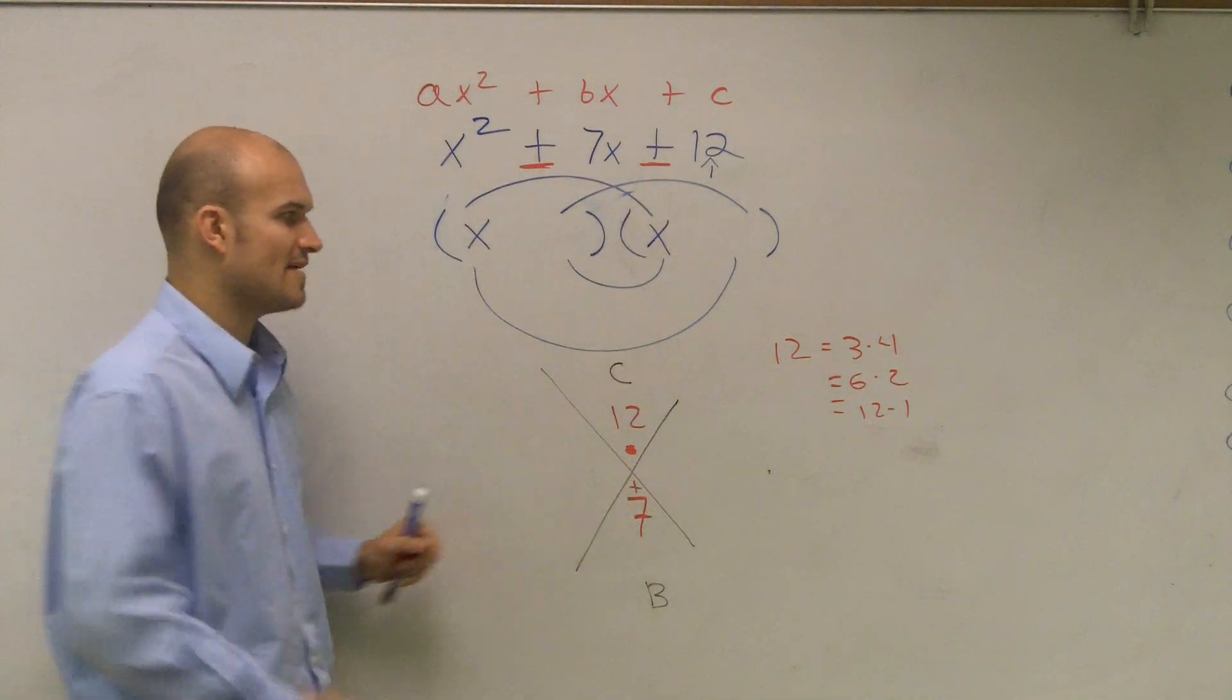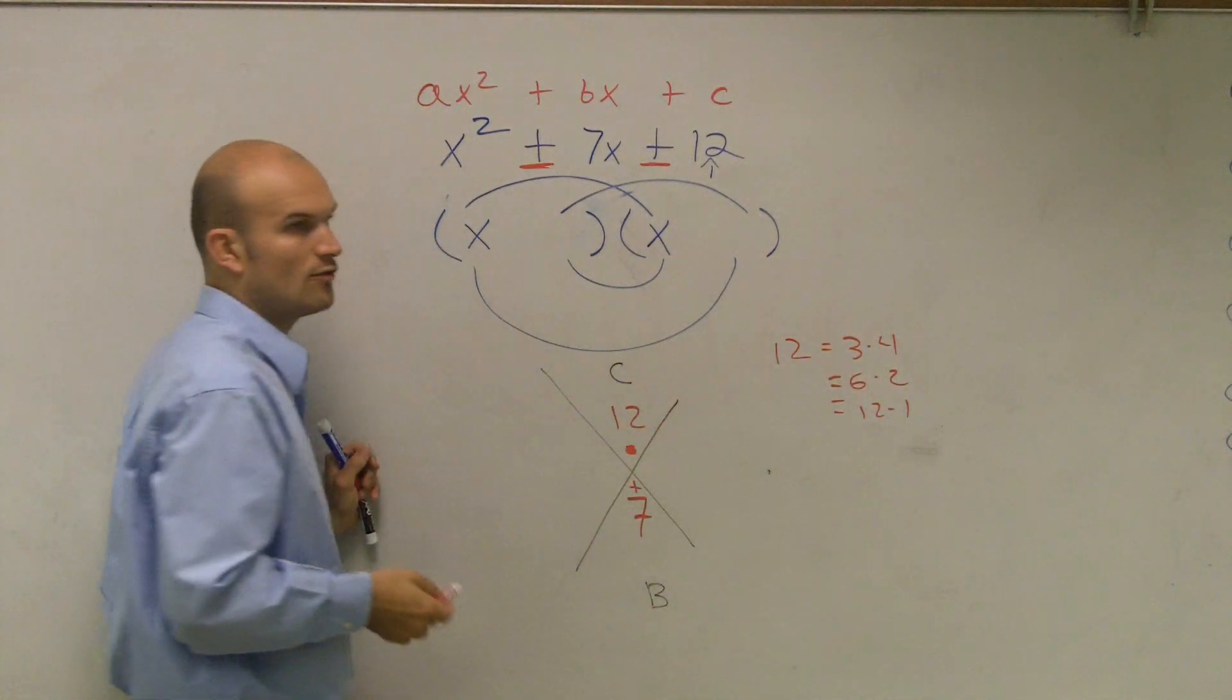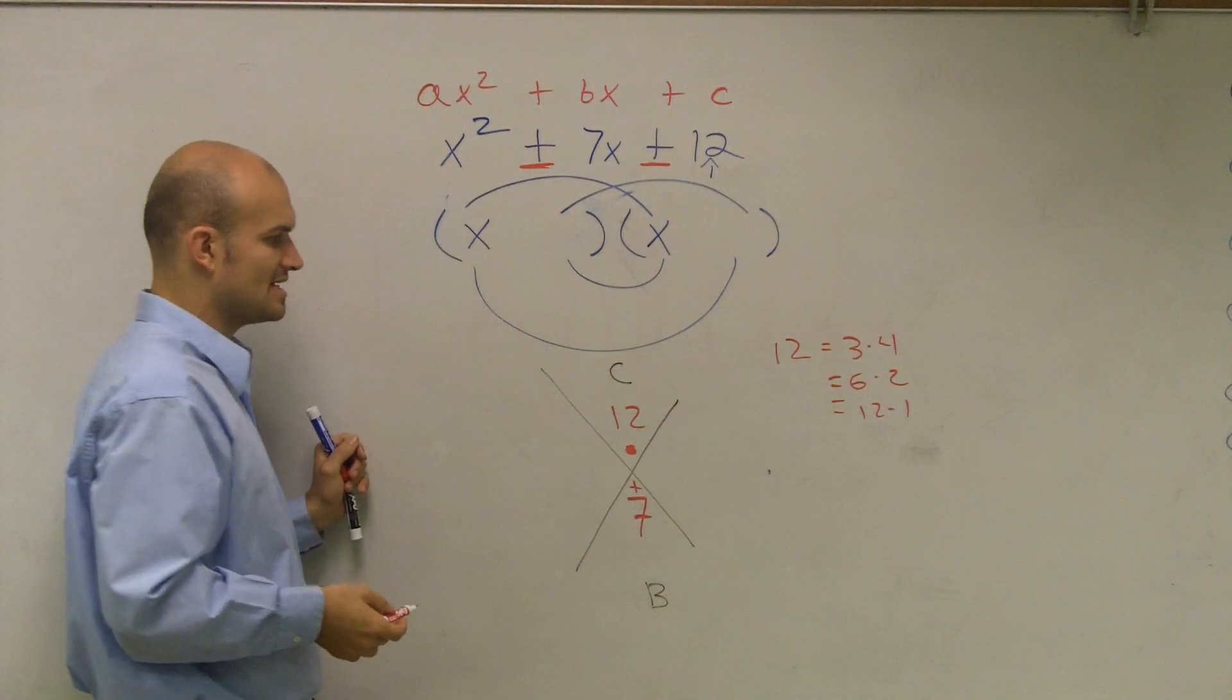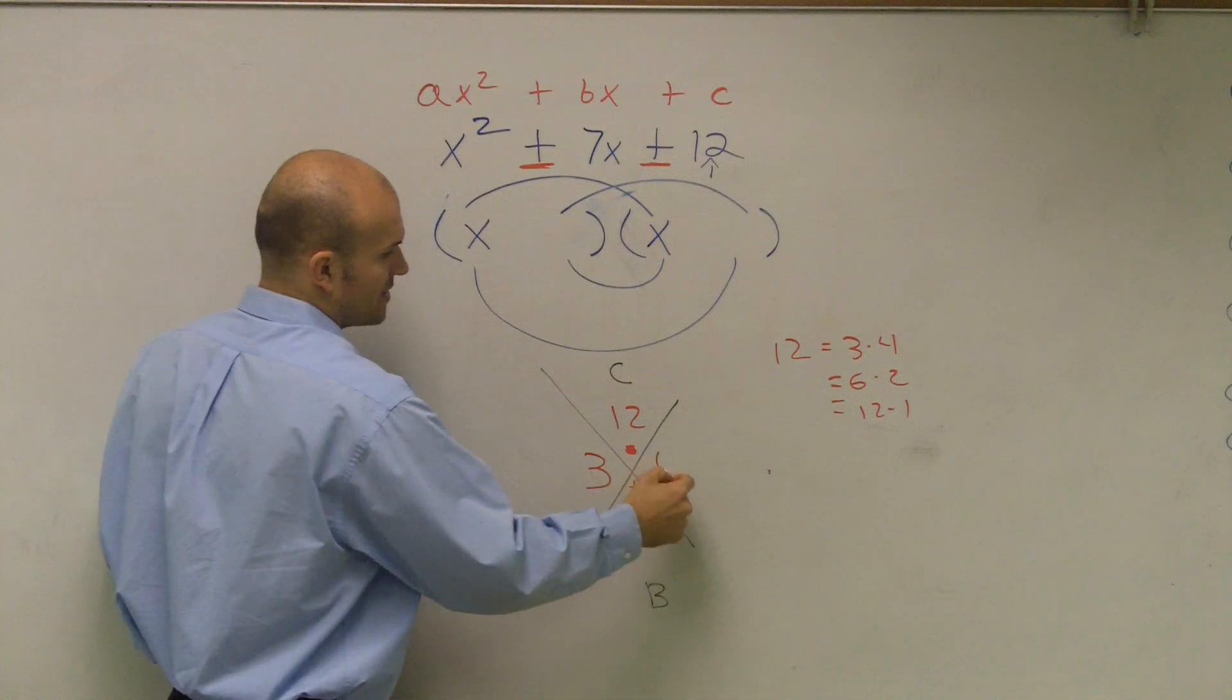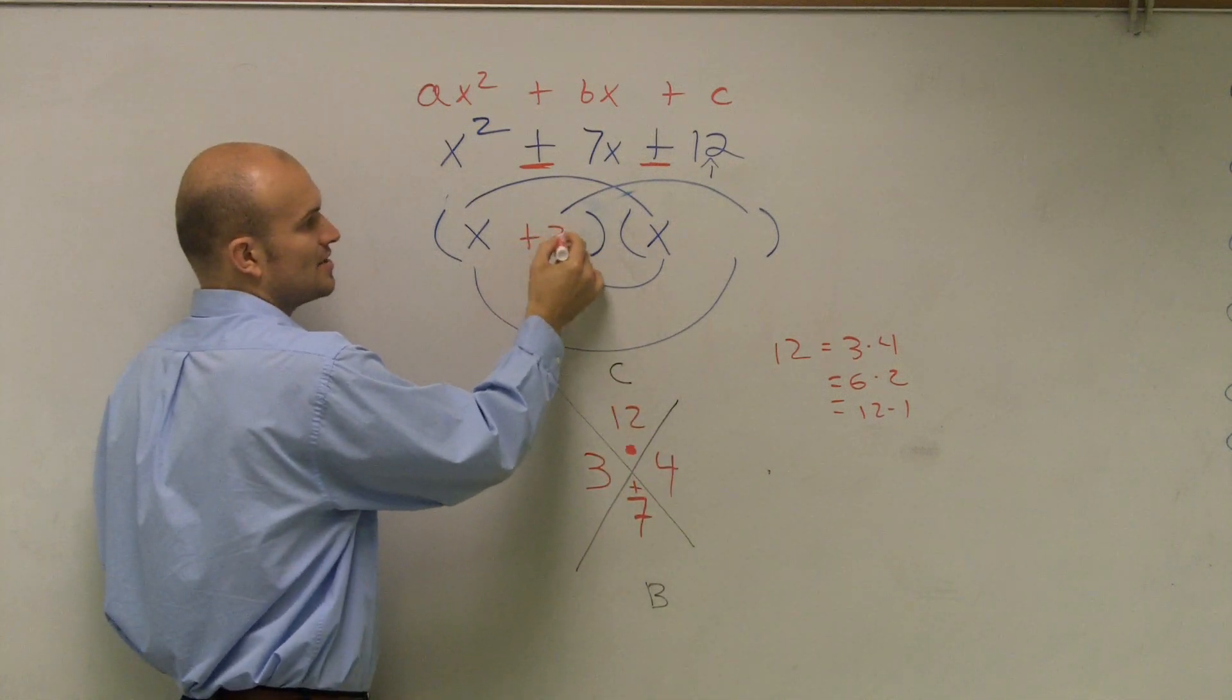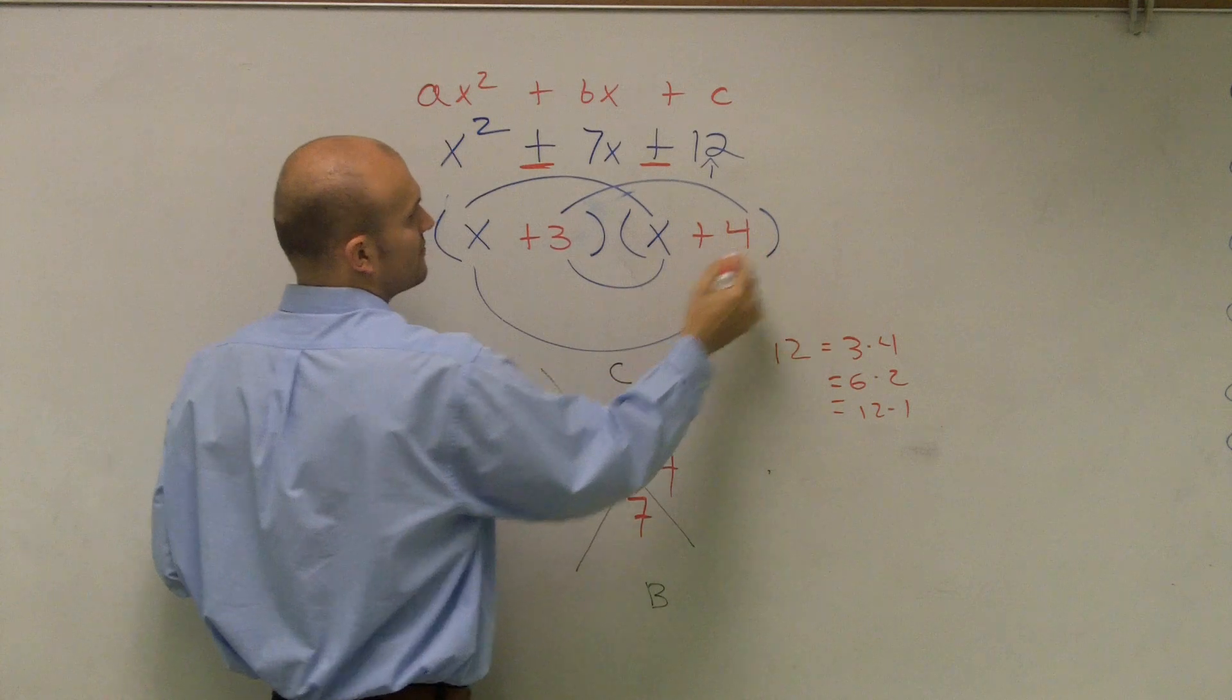When you have a positive and a positive, only think about the positive factors. So which two of these numbers, and they all multiply to give us 12, which ones add up to 7? 3 and 4. So that's why I say it's a positive 3 and a positive 4.